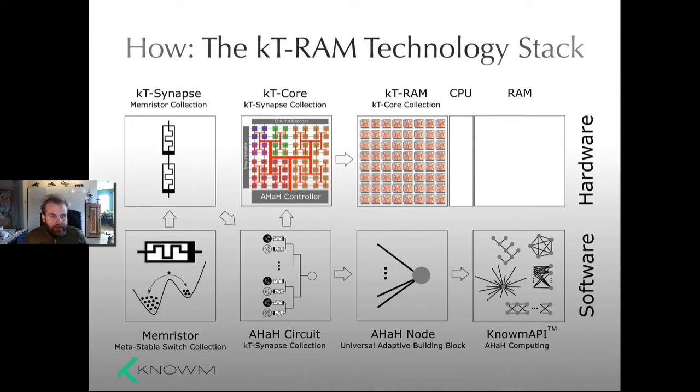Okay, so first, the how. We call this the thermodynamic RAM, or KTRAM technology stack. This is an abstract representation of multiple levels of abstraction that take us from devices that we call memristors. Actually, even below the device, we call it memristor. We think of it as collections of what we call metastable switches. Through memristors, through memristor circuits, through cores, through collections of cores, all the way up this stack that ends in, in essence, a software layer that we're all quite familiar with.